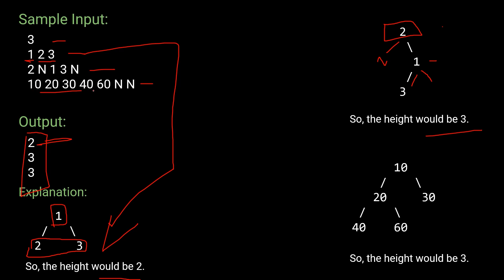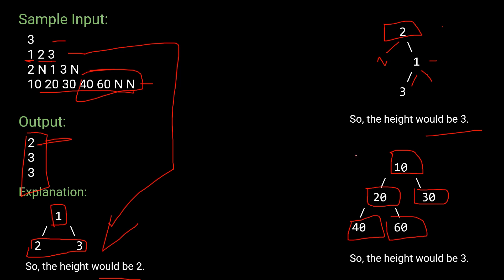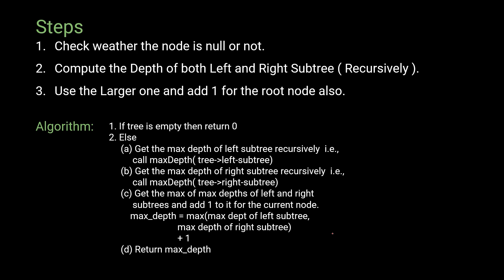For the third test case, 10 is the root node with left child 20 and right child 30. At the next level, 40 is the left child of 20 and 60 is the right child of 20, while 30 has null children. The height of this tree is 3.